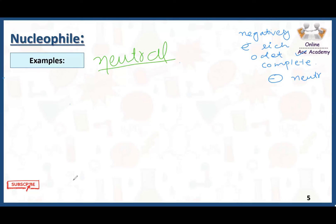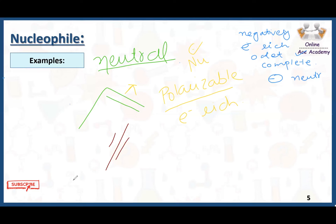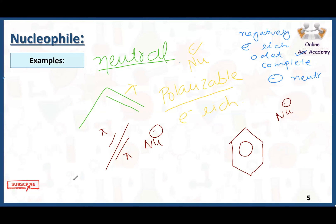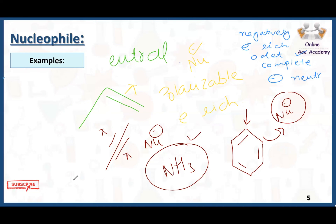We have neutral nucleophiles also. For example, we have alkenes, which have pi bonds. These pi bonds are easily polarizable and donatable, which is why alkenes act as nucleophiles. Alkynes also have pi bonds that are very polarizable and donatable, so alkynes also act as nucleophiles. Benzene also acts as a nucleophile by donating its electrons. These are all examples of neutral nucleophiles.